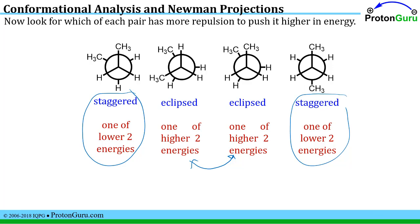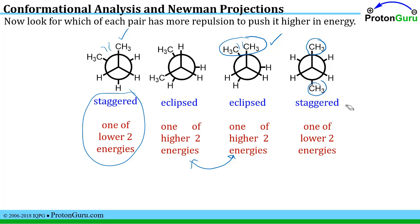Let's compare the two eclipsed conformations. The two largest groups — the most repulsive groups — are right up eclipsing each other here. That's going to be more repulsive than a tiny little hydrogen trying to get an eclipsing interaction with a methyl group. This is going to be really bad for stability; it's going to take a great deal of energy to push those two large groups together. Even if the two groups in the staggered conformations come a little bit closer to each other and start to bump, it's still not as bad as an eclipsing interaction.